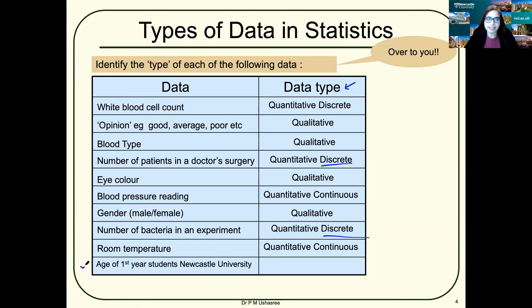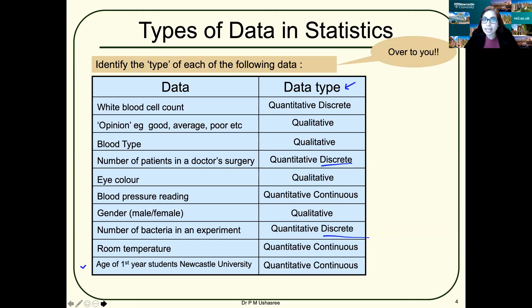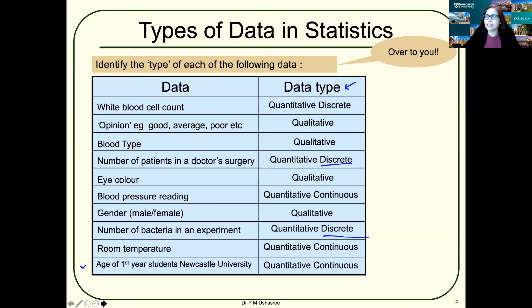Age is quantitative continuous data. You could be 18 years old; your friend could be 18.5 years old — that is 18 and a half. Another friend could be 18 years nine months old, meaning 18.75 years old. Or 18 years two months old, meaning 18.1666 years old. We could use infinite decimal places to express age, so age is quantitative continuous data.